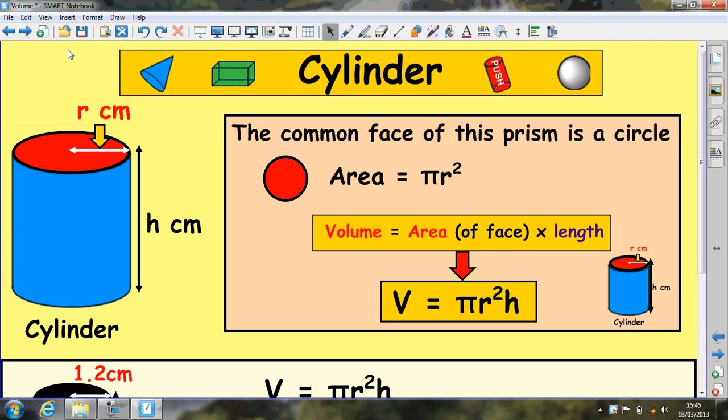In this lesson we're going to look at the volume of three different types of 3D shapes, the first one being the cylinder.